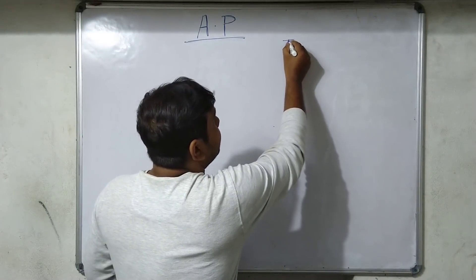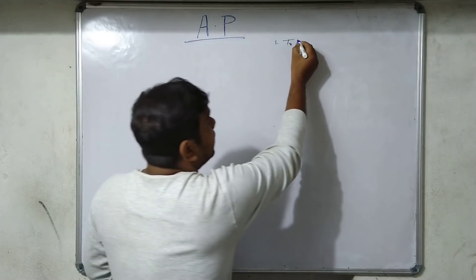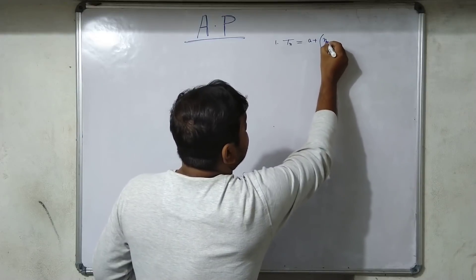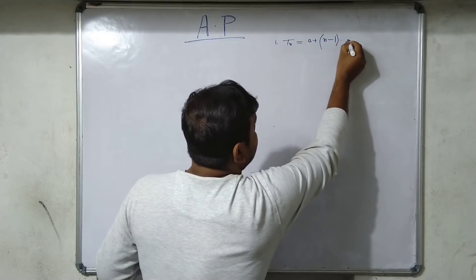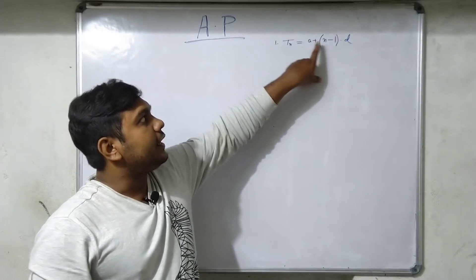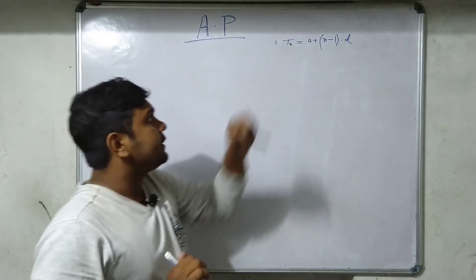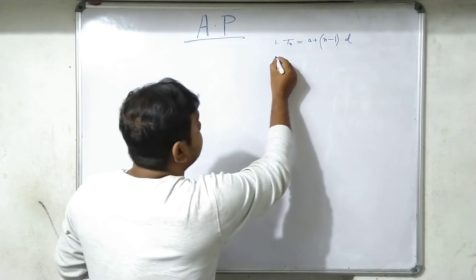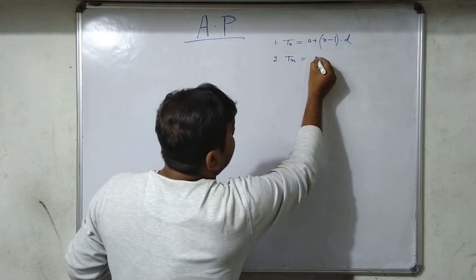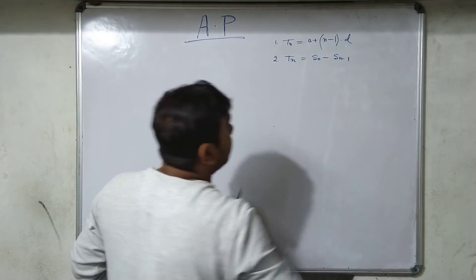Formula 1: Tₙ = A + (N - 1) × D, where A is the first term, N is the number of terms, and D is the common difference. Formula 2: Tₙ = Sₙ minus Sₙ₋₁.